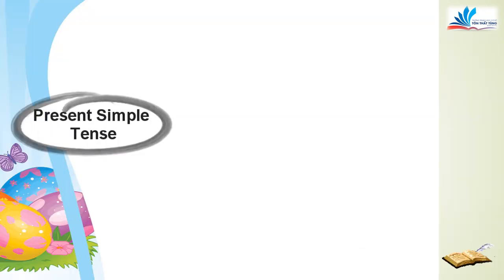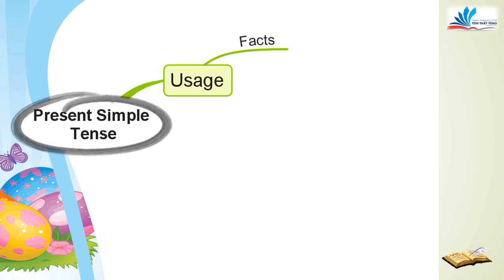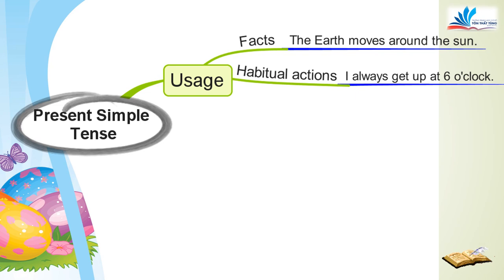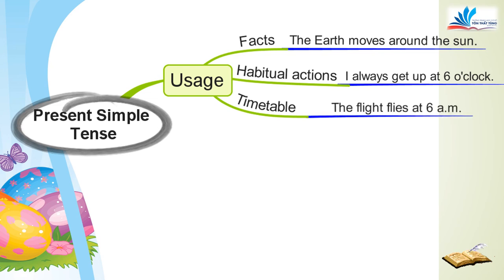The next important part is the uses. First, we use the present simple to talk about facts. For example: the earth moves around the sun. Second, we use it to talk about habitual actions. For example: I always get up at 6 o'clock. And the last one, we use it to talk about timetables. For example: the flight flies at 6 a.m.